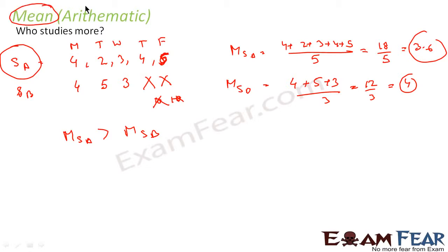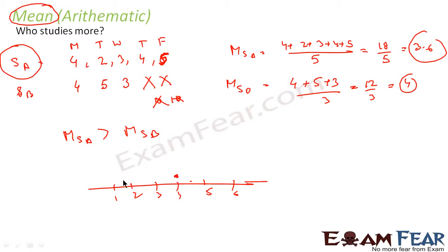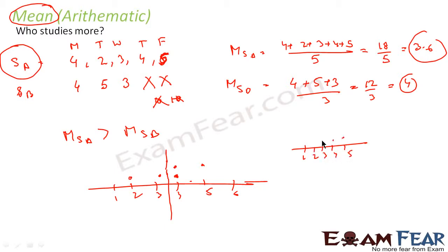Mean is one of the measures of central tendency — it tells you where the exact center of the data is. For example, on a number line with values one through six, if you plot Student A's data — four, two, three, four, five — the mean comes out to 3.6. That point on the number line represents the central value, meaning all the data revolves around this value. Similarly, for Student B's values four, five, three, the average is four, which is the central tendency of that data.